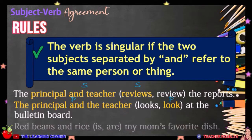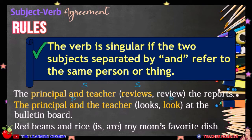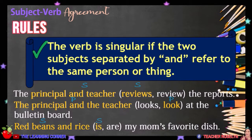Another example. The subject RED BEANS AND RICE refers to a single dish, that's why we have a singular subject. Therefore, the verb to be used is IS. Red beans and rice is my mom's favorite dish.